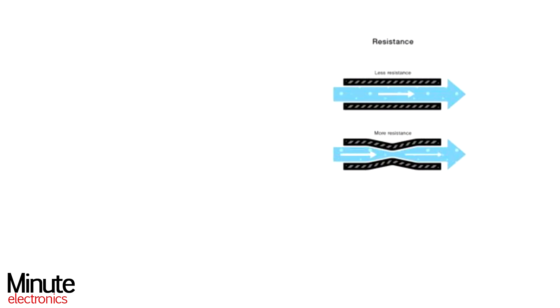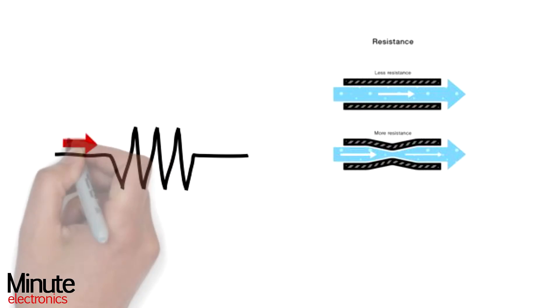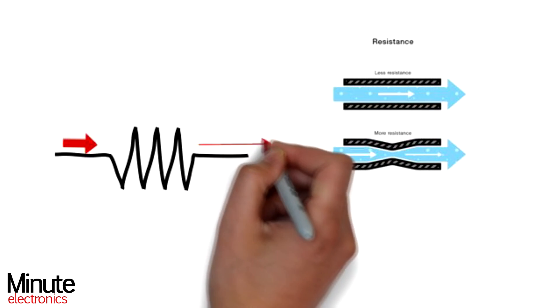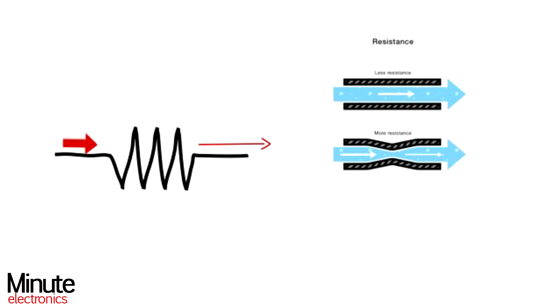To explain the definition more clearly, we take an example of water flowing through a pipe. It is the same as current flowing through an electrical circuit. But if we make the tube narrow from any point, then the water flow reduces. The resistor is the same as that narrow tube and it opposes and reduces the flow of current through it.